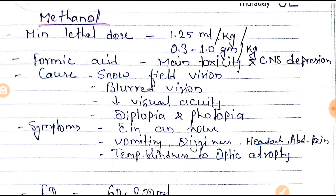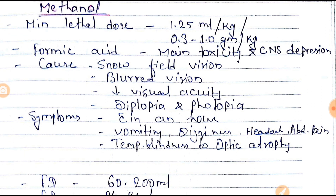The minimum lethal dose of Methanol is 1.25 ml per kg or 0.3 to 1 gram per kg. Formic Acid is the main toxic material formed by Methanol metabolism, which causes CNS depression.